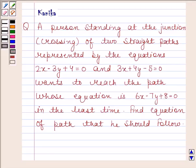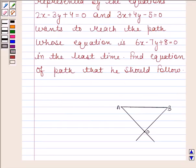Let us first make a figure to understand this question. Suppose OA and OB these are straight paths whose equations are 2x minus 3y plus 4 equals 0 and 3x plus 4y minus 5 equals 0. These two paths intersect at O and the person is standing at point O.